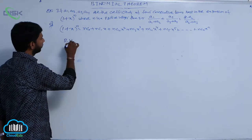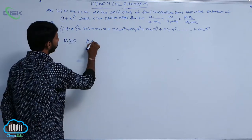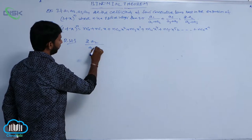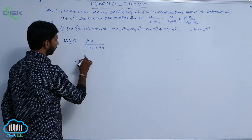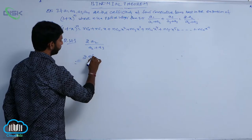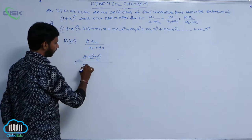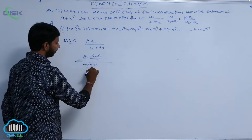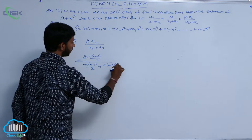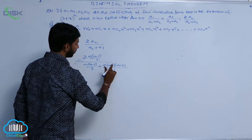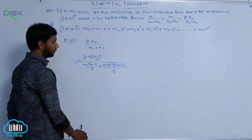Next, go to RHS. Here RHS is 2A2 by A2 plus A3. Substituting the values, A2 means NC2, that is N(N-1)/2. So RHS becomes 2 times N(N-1)/2 divided by N(N-1)/2 plus N(2N-1)(2N-2)/6, which simplifies with N(2N-1)(N-2)/6.